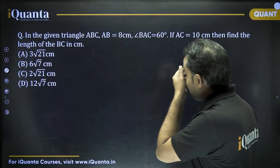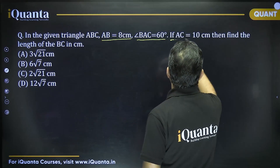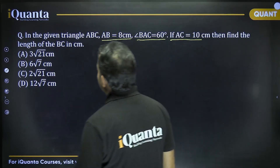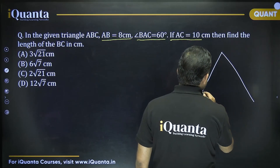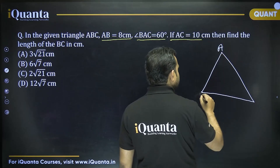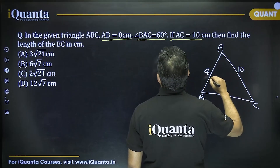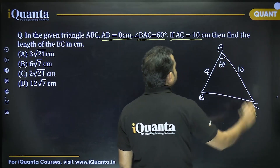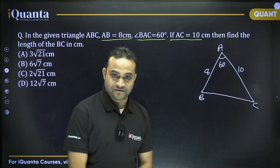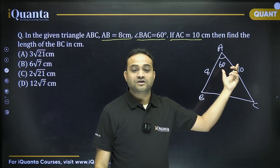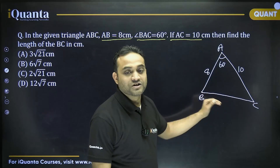Next question: in triangle ABC, AB = 8 cm, angle BAC = 60°, and AC = 10 cm. Find the length of BC. Two sides and the included angle are known, so we need to find the third side.